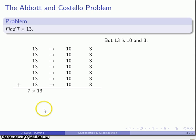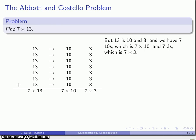So what do I have? Well I have 7 tens and I have 7 threes. So if I put those together, this sum of 7 tens and 7 threes is the same as 7 thirteens.